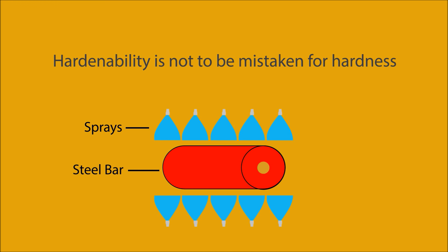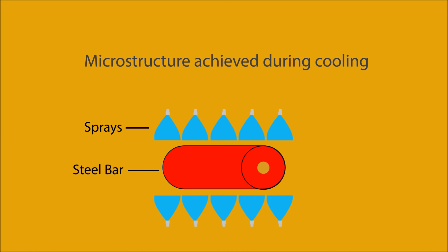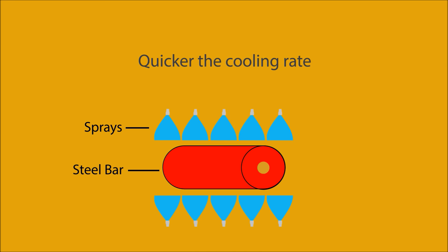Hardenability is not to be mistaken for hardness. When describing hardness, we are often looking at the microstructure achieved during cooling. For a given steel, it can be assumed that the quicker the cooling rate, the greater the chance of achieving a harder structure. And if that steel has high hardenability, this hard structure will be present deeper into the thickness.